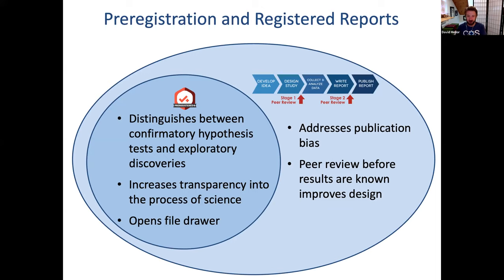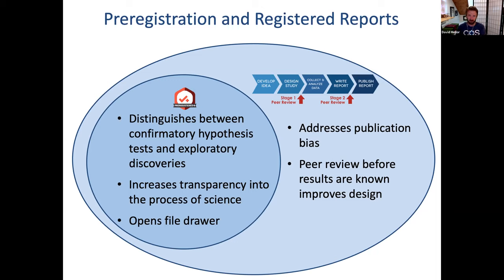Pre-registration and registered reports can both distinguish between confirmatory hypothesis testing and exploratory discoveries. Both can increase transparency into the process of the work and they can help to open the file drawer. When the journal is involved in both steps of the process, that can help reduce publication bias and improve study design by getting peer review at a point in the research workflow where design considerations can be addressed before the study is conducted.